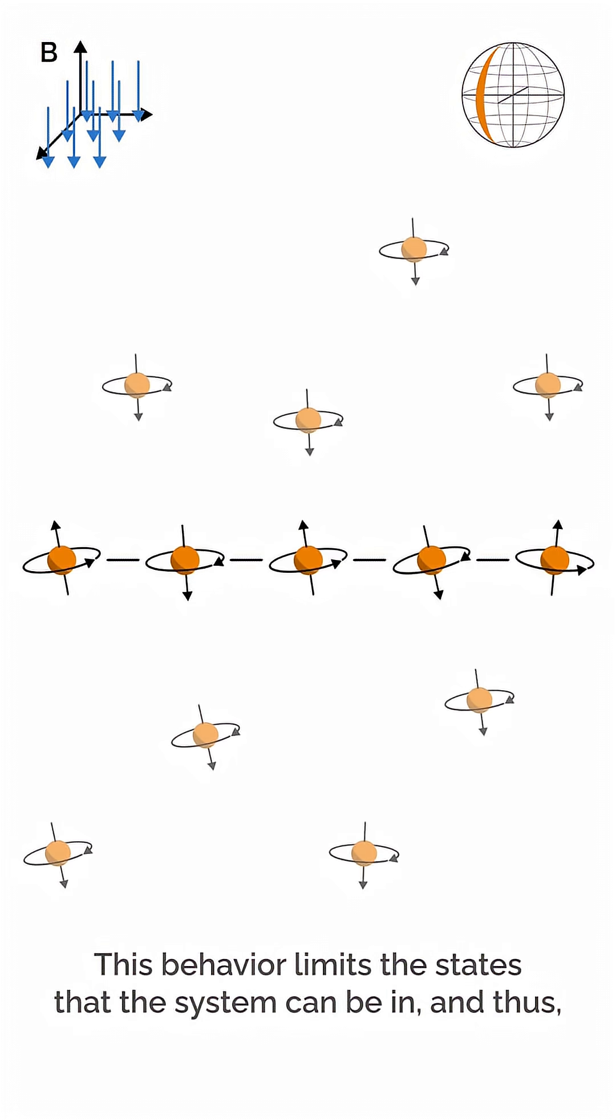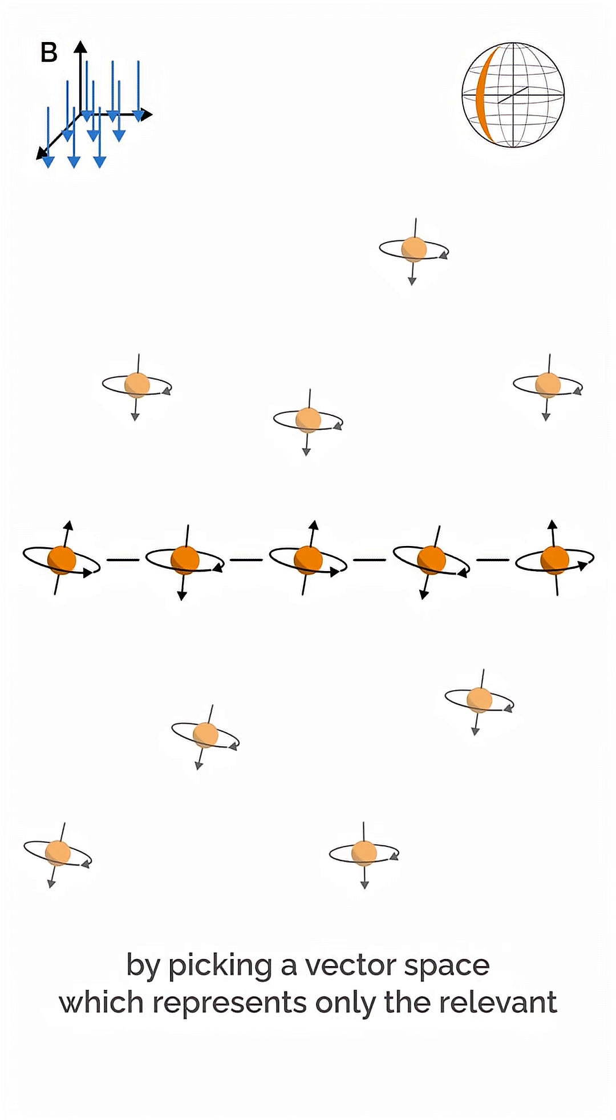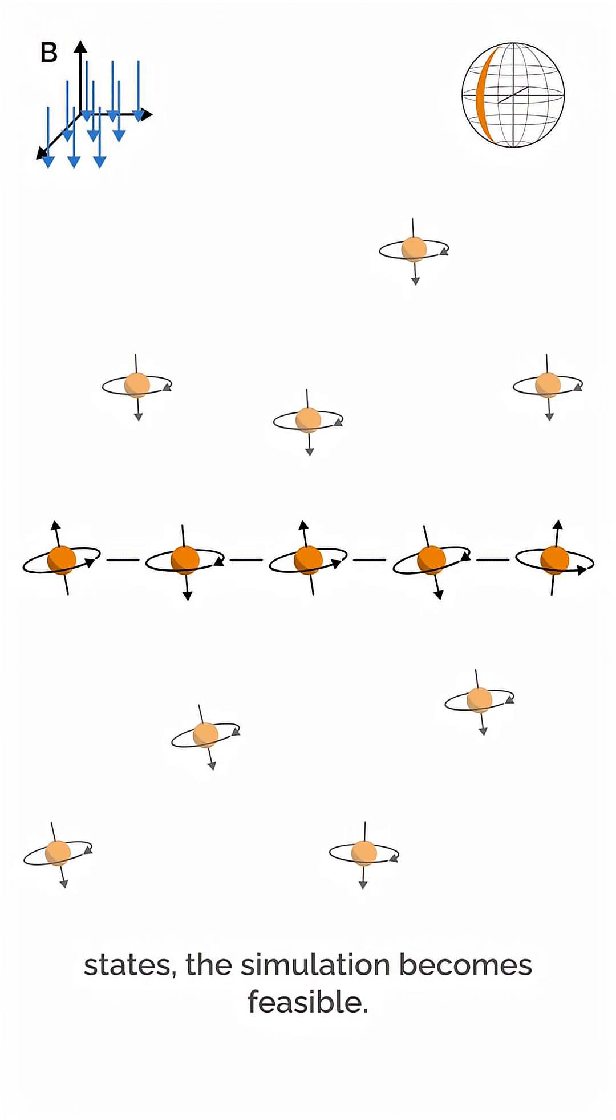This behavior limits the states that the system can be in, and thus, by picking a vector space which represents only the relevant states, the simulation becomes feasible.